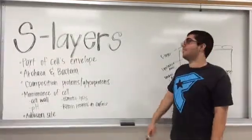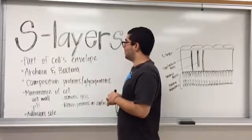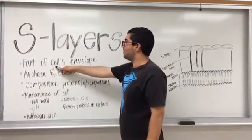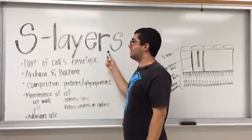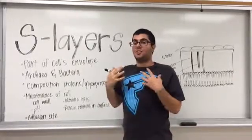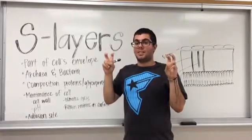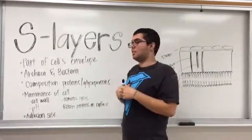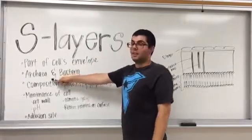My name is Shayan and we will be continuing off of previous group members' discussion. Here we have parts of the cell's envelope. S-layers are located in both gram-positive and gram-negative bacteria and serve as protection and a pore for bacterial cells. They are also found in archaea and bacteria.